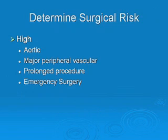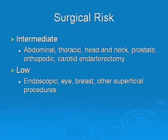How do you stratify surgical risk? We stratify into three categories — high, intermediate, and low. A high-risk surgical procedure includes major peripheral vessel surgery, CABG, anything involving the aorta, prolonged procedures, or emergency surgery. Intermediate surgical risk includes abdominal surgeries, gallbladder, colon resection, thoracic surgeries, head and neck, prostate surgeries, orthopedic procedures, and carotid endarterectomy. Lower-risk surgical procedures include anything endoscopic, procedures involving the eyes such as cataract surgery, breast surgery, or other superficial procedures.